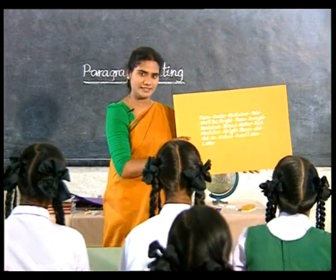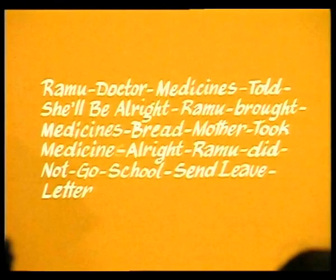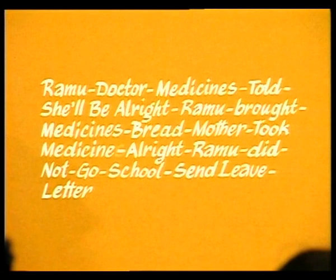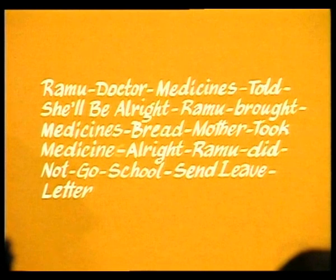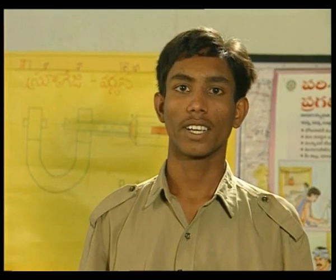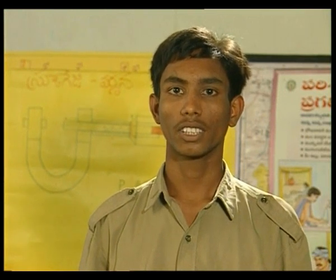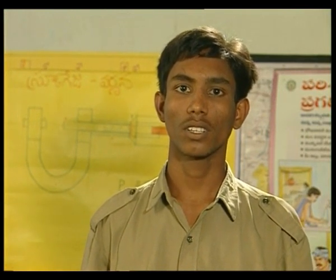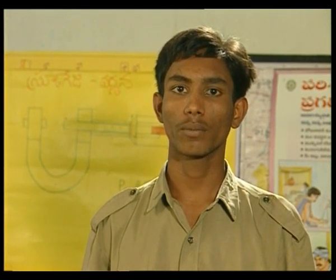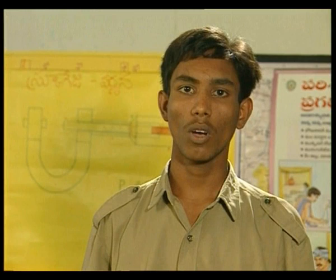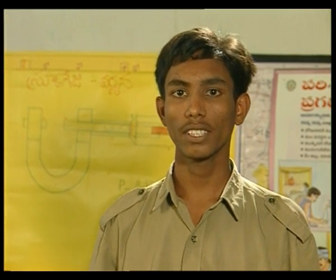Now look at some more hints and try to frame sentences: Ramu, doctor, medicines, told she'll be all right, Ramu brought medicines, bread, mother, took medicine, all right, Ramu did not go to school, send leave letter. Using these hints: Ramu called a doctor. The doctor treated Ramu's mother and said she will be all right. The doctor gave medicines. Ramu bought some more medicines and bread for his mother. Mother took the medicines and became all right. As Ramu could not go to school, he sent a leave letter.